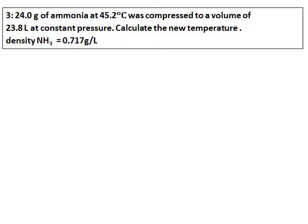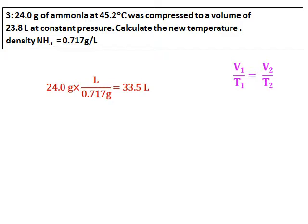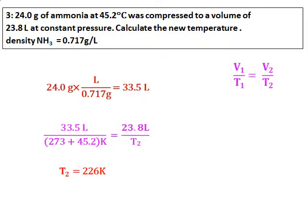Third question: 24.0 grams of ammonia at 45.2 degrees Celsius was compressed to a volume of 23.8 liters at constant pressure. Calculate the new temperature. Density of ammonia is given. Since volume and temperature are involved at constant pressure, the formula is V1/T1 = V2/T2. However, V1 is not directly given — use mass divided by density to calculate the initial volume. Then, with V1, V2, and T1 converted to Kelvin, calculate the final temperature.